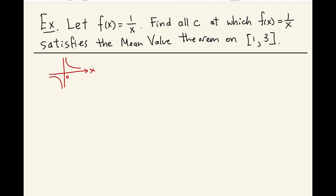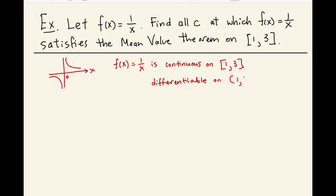This function is continuous on the closed interval [1, 3], and it is differentiable on the open interval (1, 3). We know that the derivative of this function — written as x to the negative 1 — is negative x to the negative 2 by the power rule, or negative 1 over x squared. This is defined for all real numbers except 0, so the function is differentiable on (1, 3).